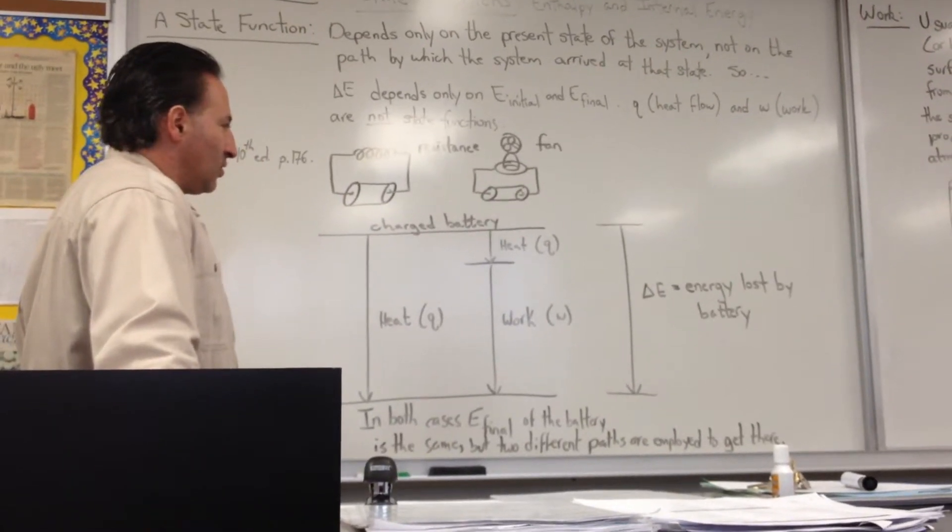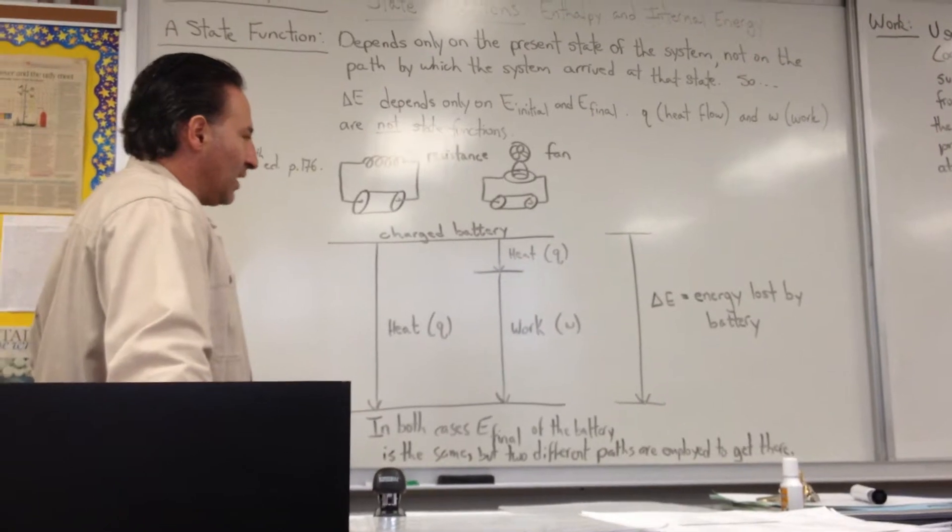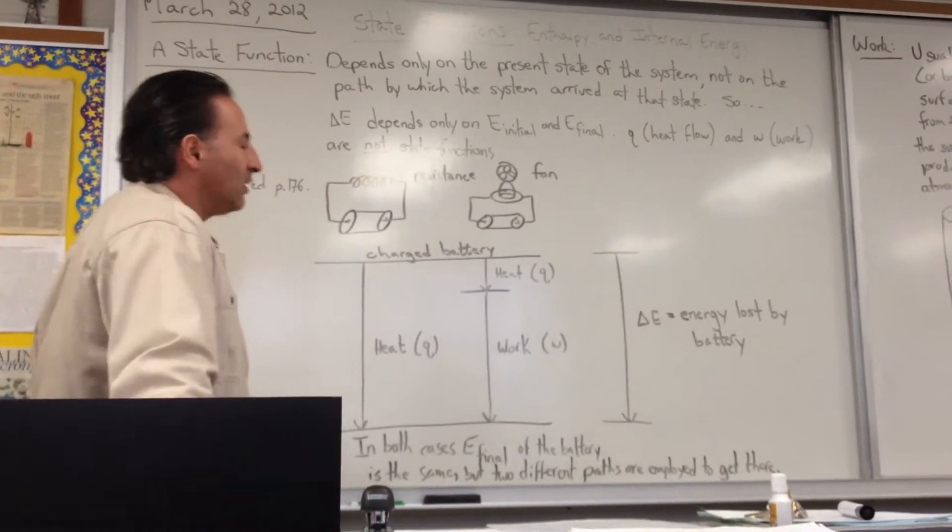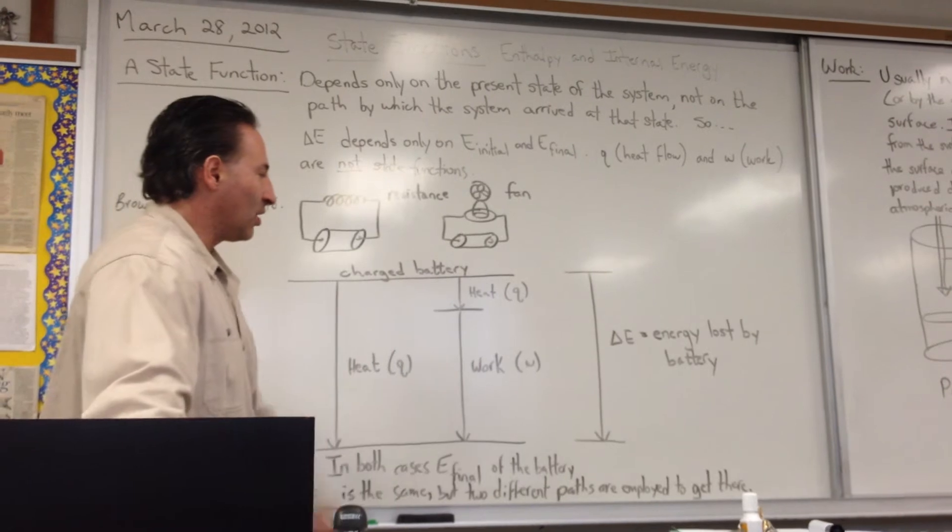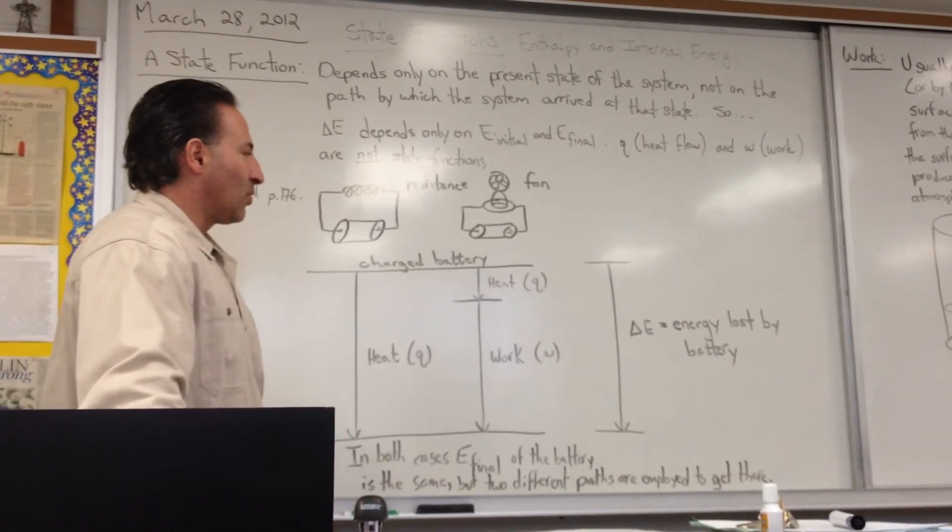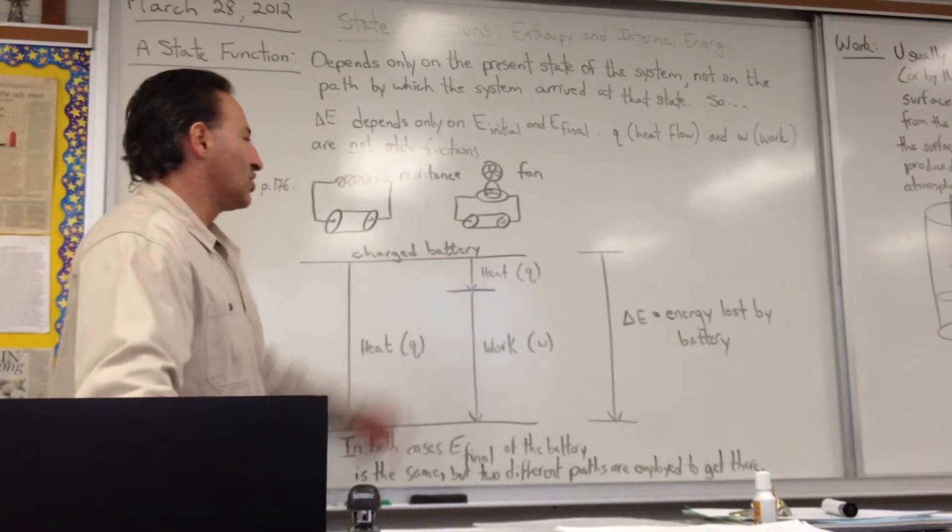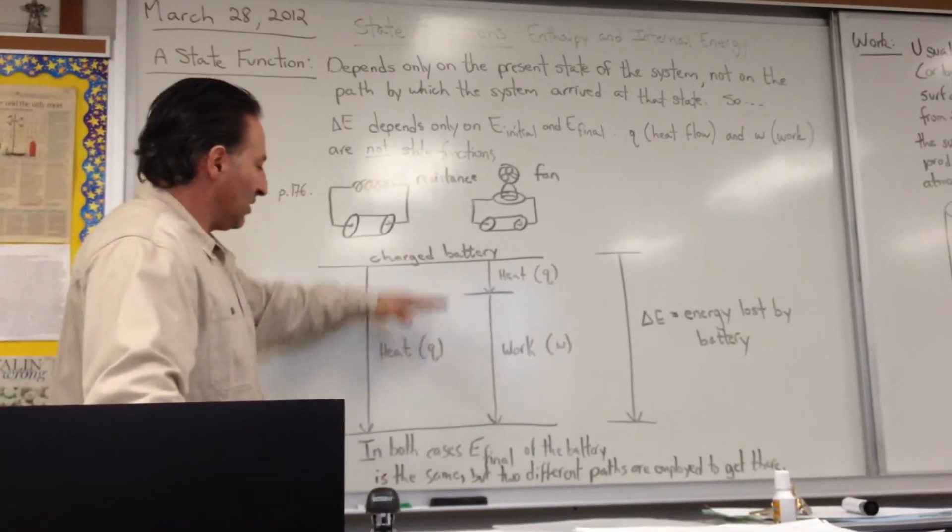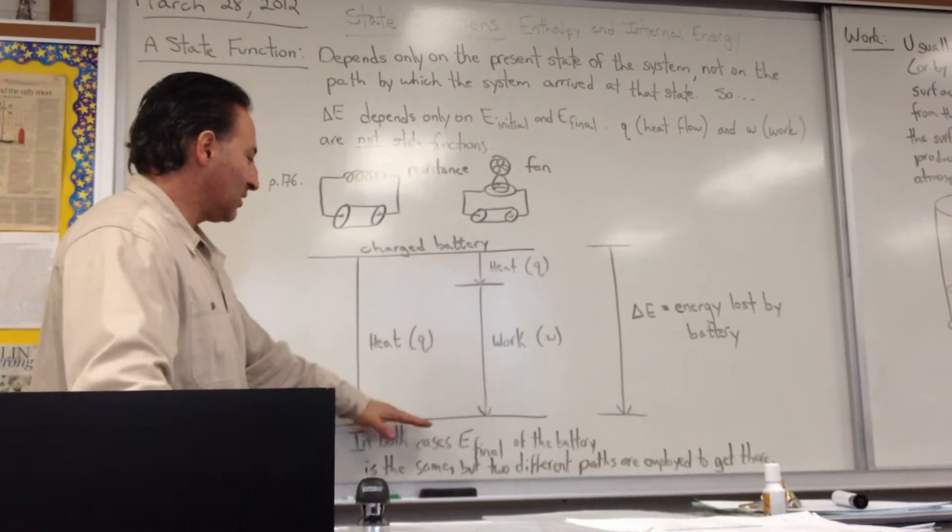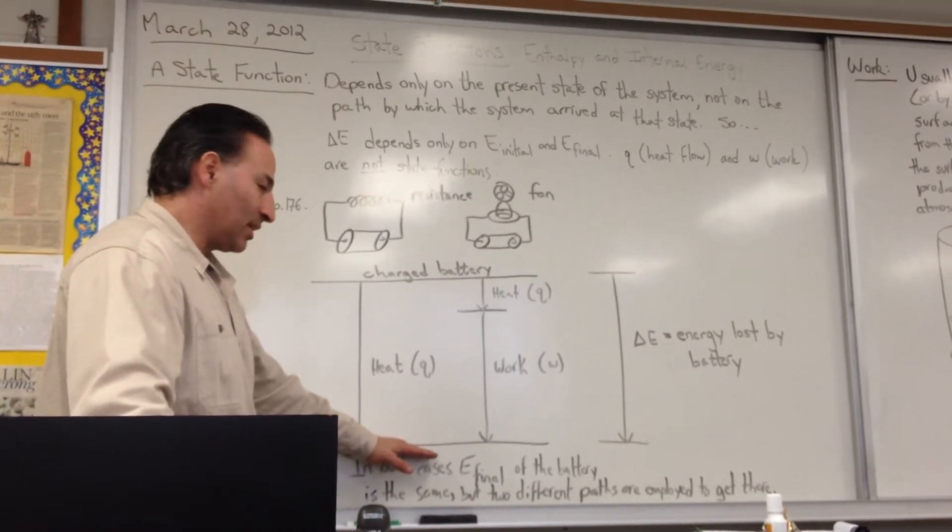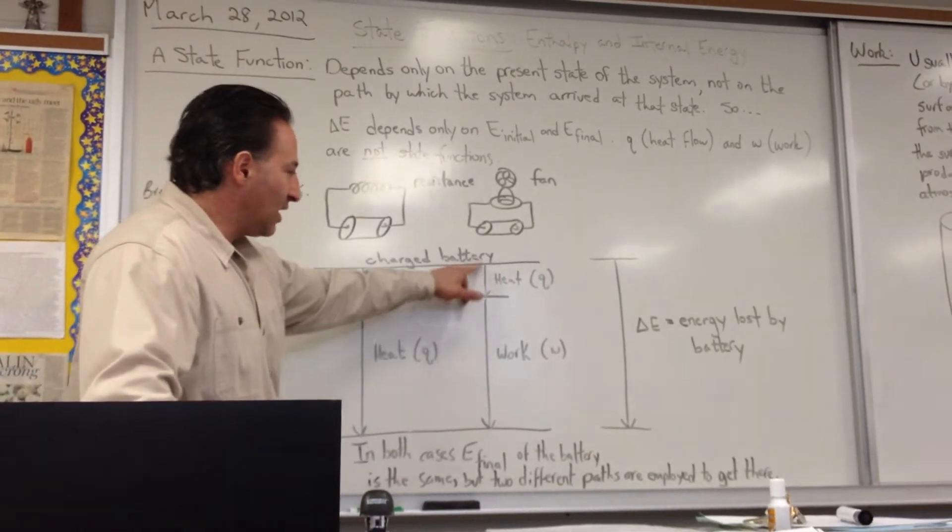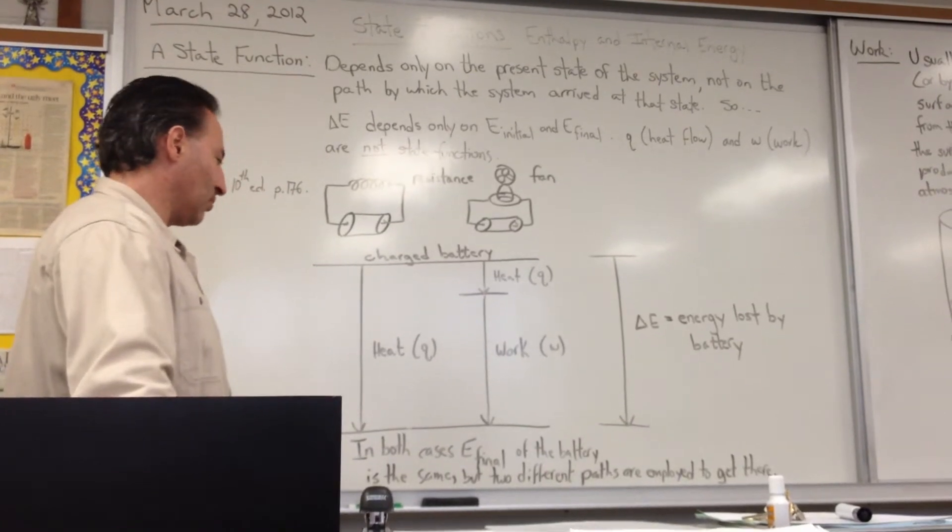On the other hand, you could have the battery hooked up to a fan. So the fan spins the blade and pushes air around. That's doing work. But the motor also warms up because the process is not 100% efficient. So it's also going to generate some heat. So you see the amount of internal energy change has been identical. You have a dead battery in both cases at the end. But in the second case, the battery has done some work.